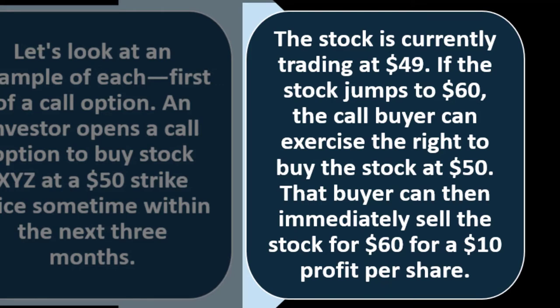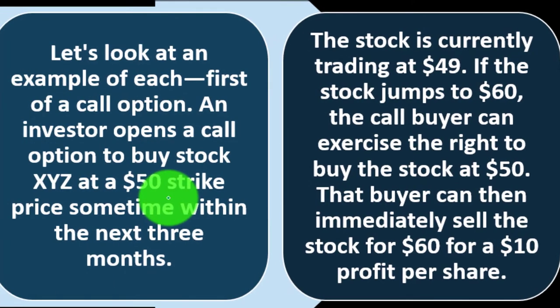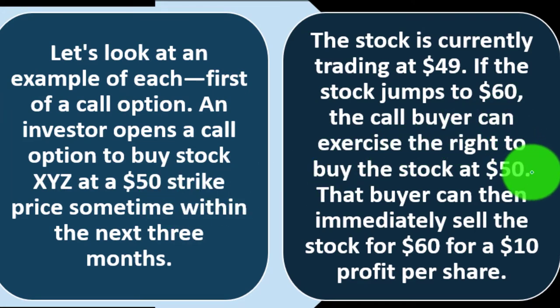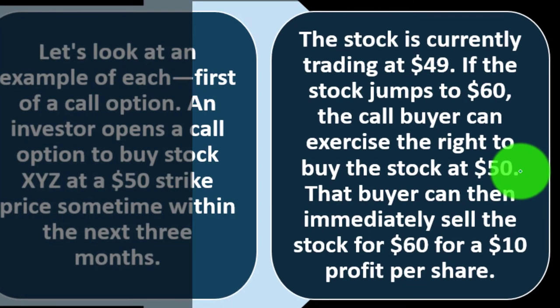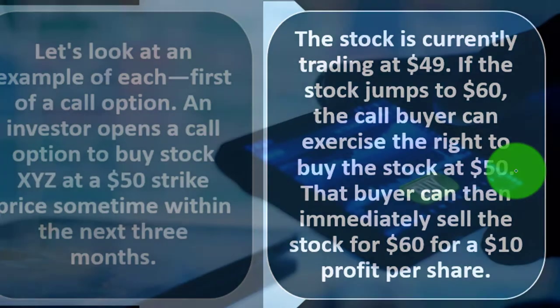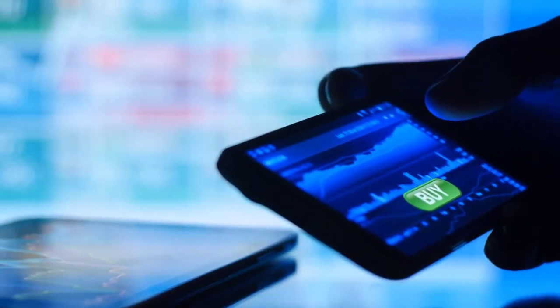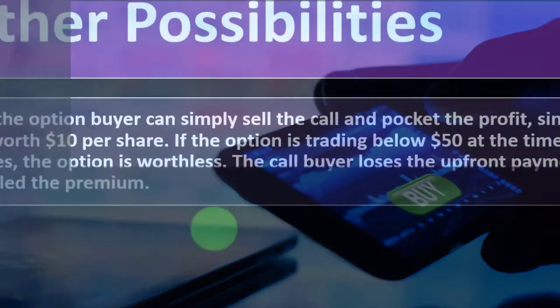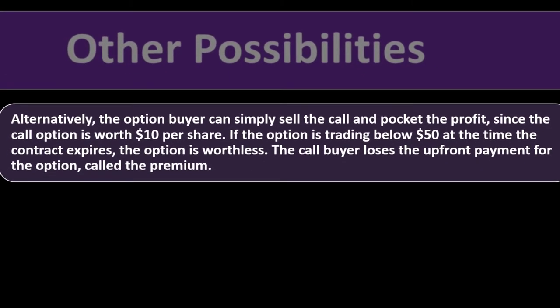If the stock jumps to $60, the call buyer can exercise the right to buy the stock at $50. That buyer can then immediately sell the stock for $60, making a $10 profit. Alternatively, the option buyer can simply sell the call and pocket the profit, since the call option is now worth $10 per share — so there's actually a market for the option itself.